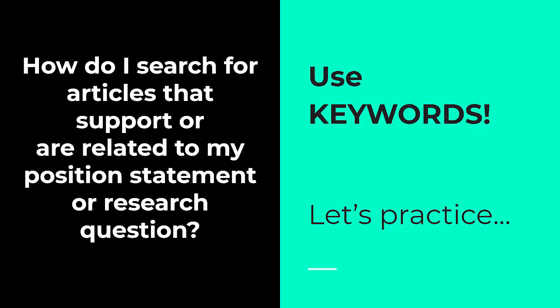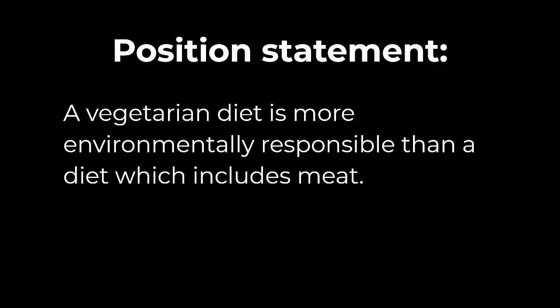So how do we search for articles related to a position statement or a research question? We can use keywords in library search tools. Look closely at your position statement and try to isolate the keywords and phrases — those important short phrases or words that really get at the most important pieces of your statement.